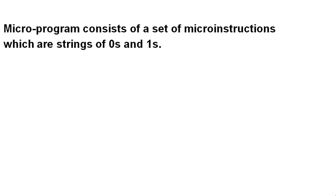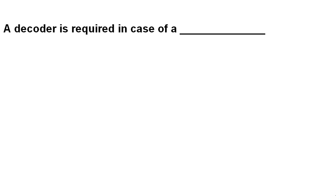Micro programs consist of a set of micro instructions which are strings of zeros and ones — is it true or false? It is true. A decoder is required in the case of vertical micro instructions.